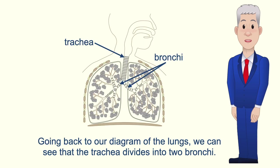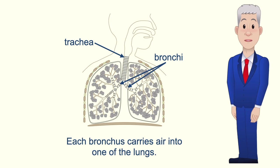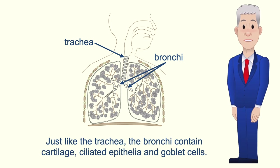The trachea divides into two bronchi, and each bronchus carries air into one of the lungs. Just like the trachea, the bronchi contain cartilage, ciliated epithelia, and goblet cells.